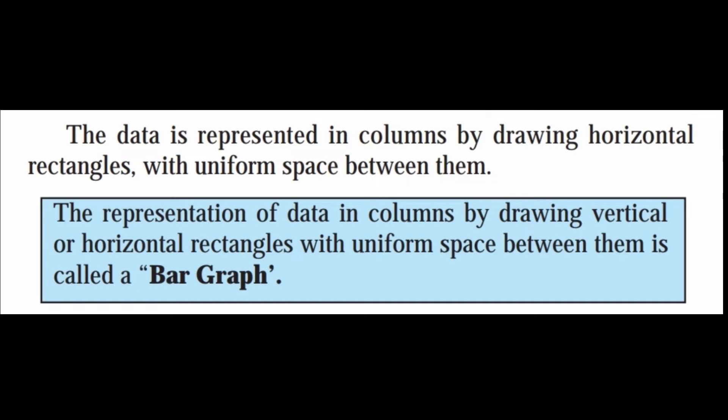The data is represented in columns by drawing horizontal rectangles with uniform space between them. The representation of data in columns by drawing vertical or horizontal rectangles with uniform space between them is called a bar graph. This is the graphical representation of the data.